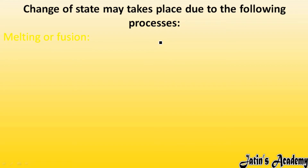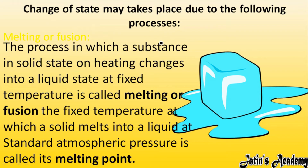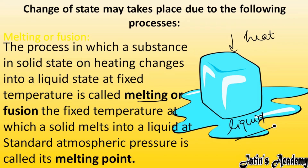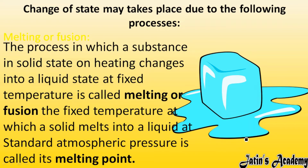The first process is melting or fusion. Melting is the process in which a substance in solid state, on heating, changes to the liquid state. For example, when we heat ice, it converts into liquid water. This occurs at a fixed temperature under atmospheric pressure — not at all temperatures. The fixed temperature at which a solid converts into liquid is known as the melting point.